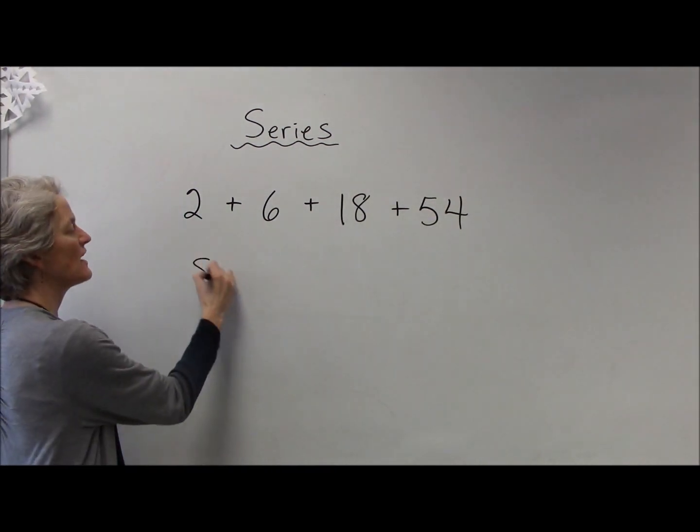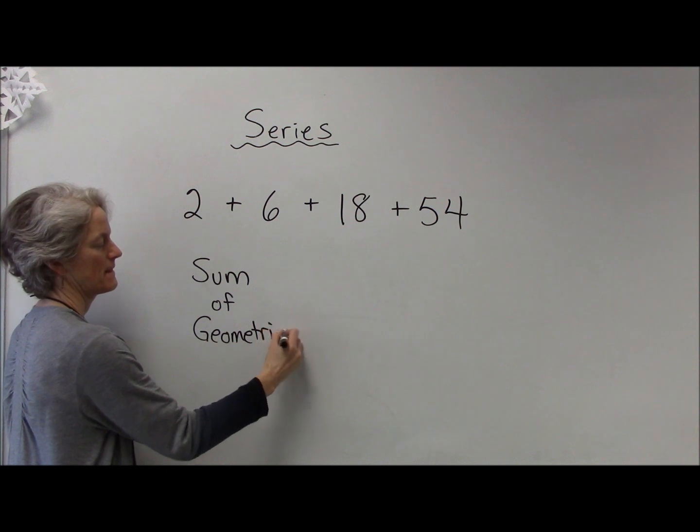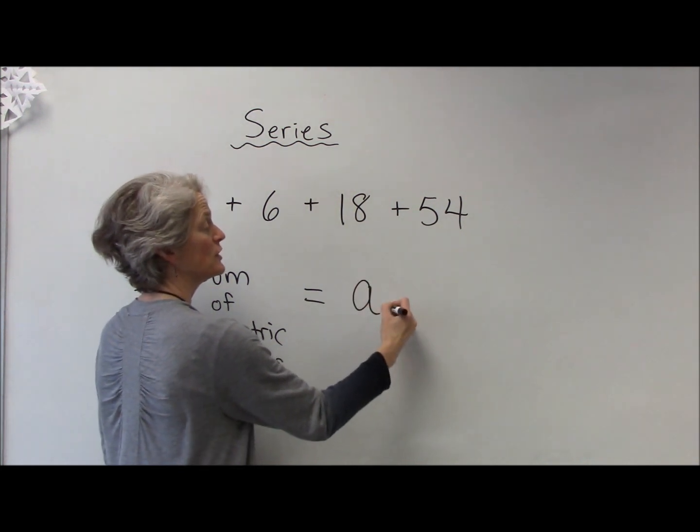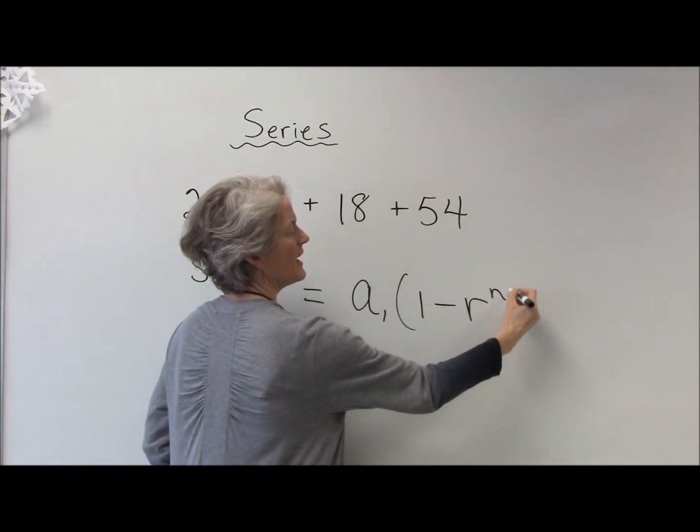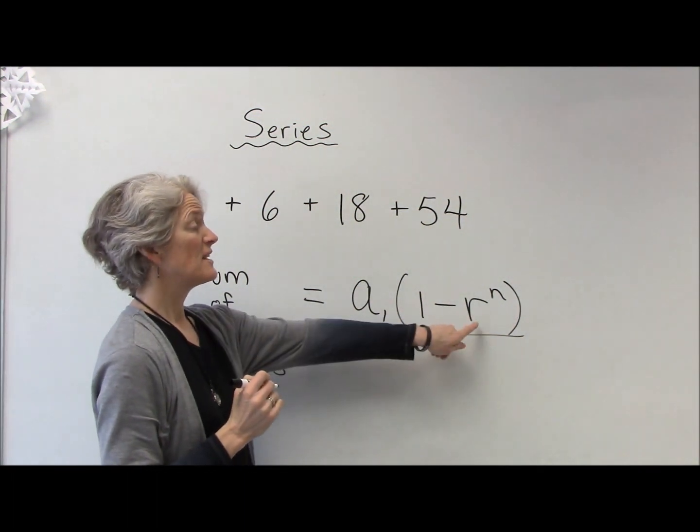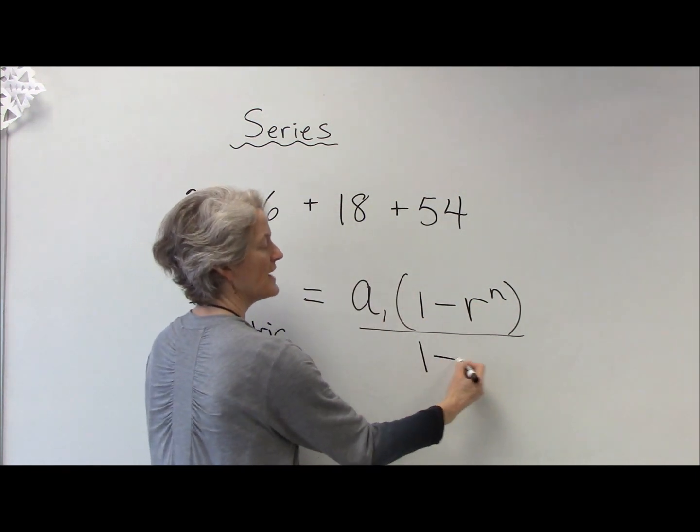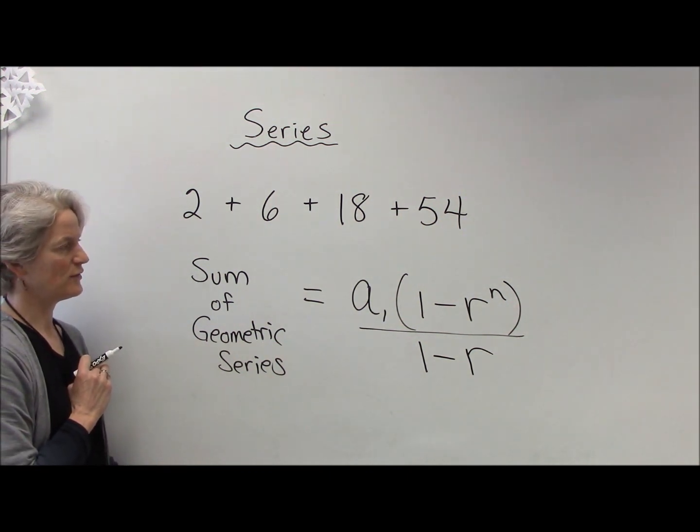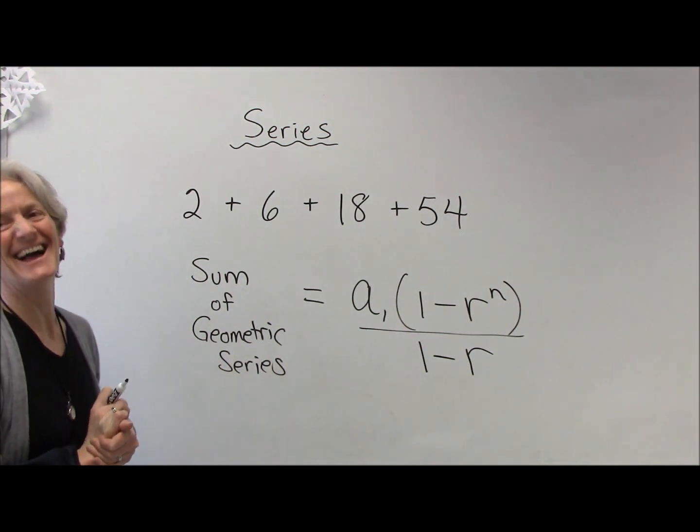So here is the shortcut to find the sum of a geometric series. It's the first term times—and this is a little weird, and again we'll derive it next class—one minus the common ratio raised to the number of terms you have, all divided by one minus that common ratio. Not at all intuitive. Gauss didn't do this until he was 10.